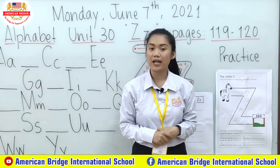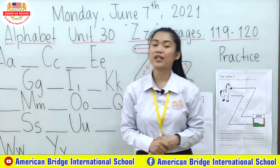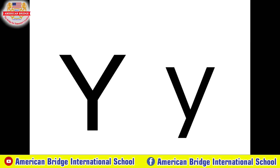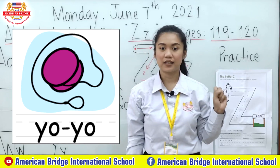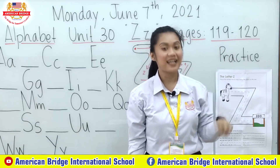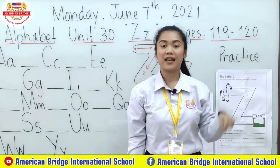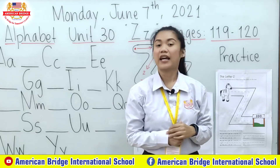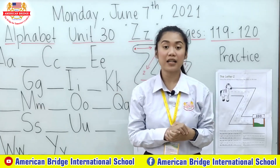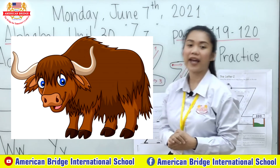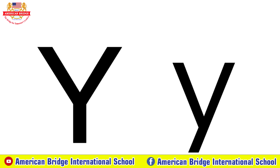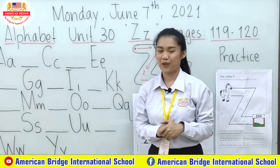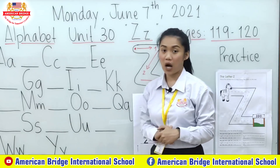Last week we studied what letter? We studied Letter Y — correct! Y is for yellow. What else? Yoyo — correct! What else? Yak — correct! And we also talked about yak. So this was our lesson last week: capital Y and small letter Y. Don't forget that previous lesson.